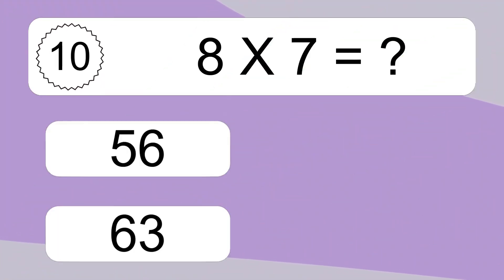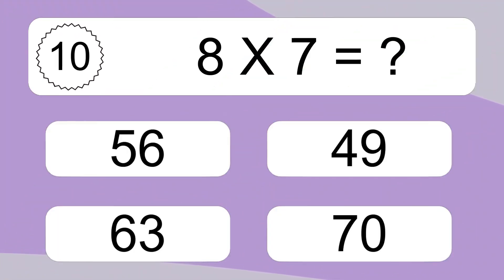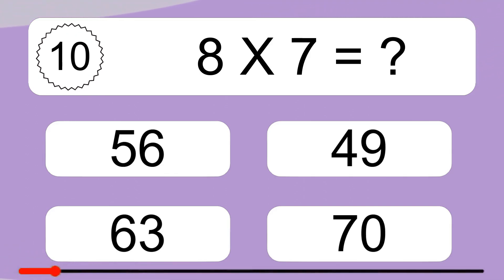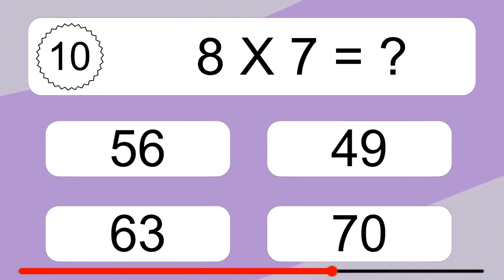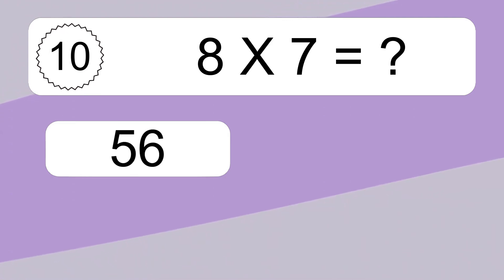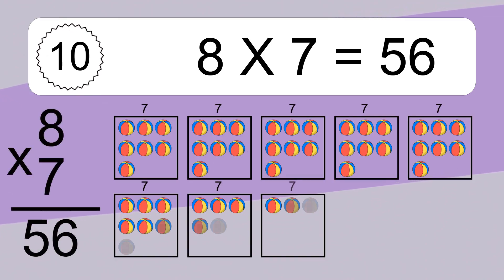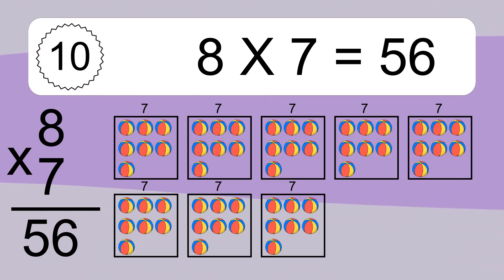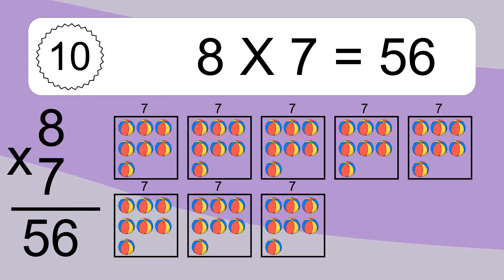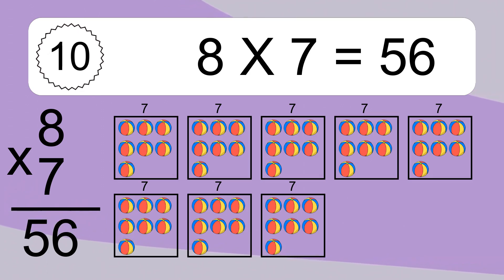8 times 7 equals what? 8 times 7 equals 56. We have 8 boxes and each box has 7 colorful balls inside. If you count all the balls in all the boxes together, you will have 8 times 7 balls. This equals 56 balls.